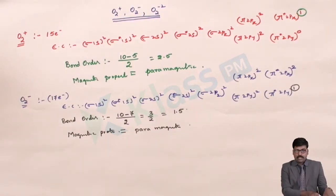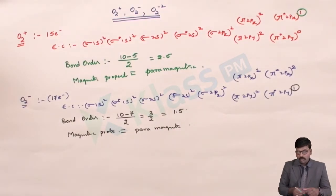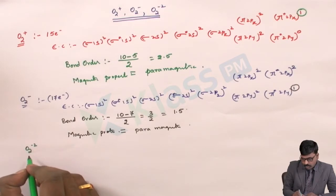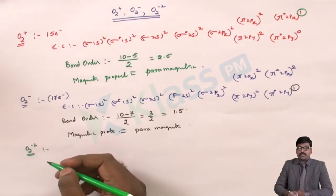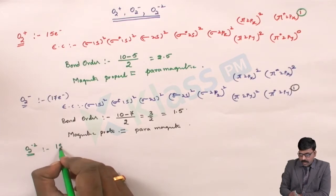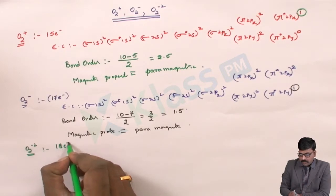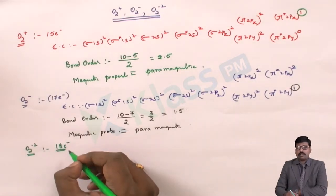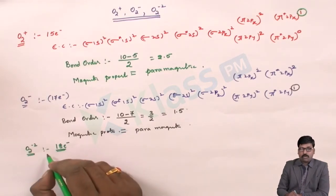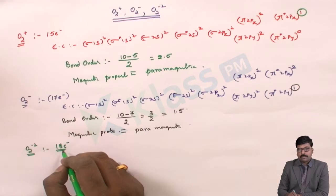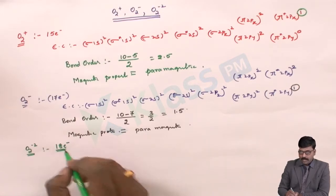Now we will see O2 minus 2. The O2 minus 2 ion has 18 electrons total — that is 16 electrons from the O2 molecule plus 2 extra electrons.